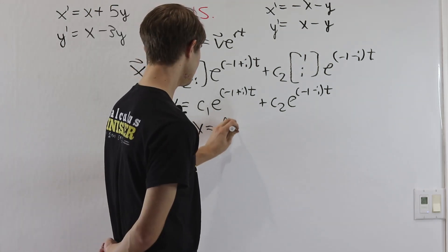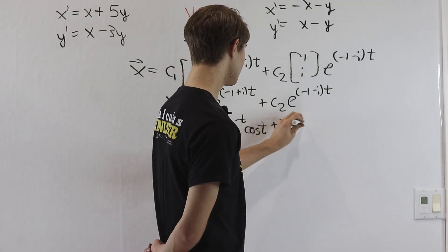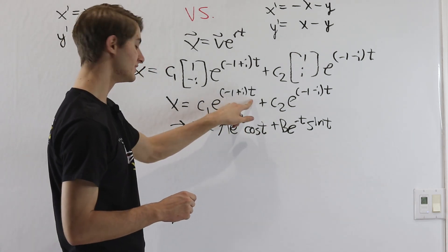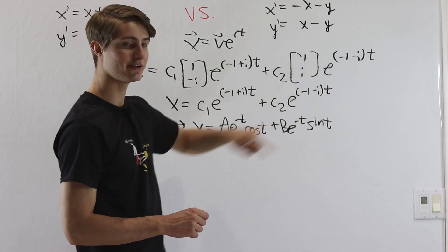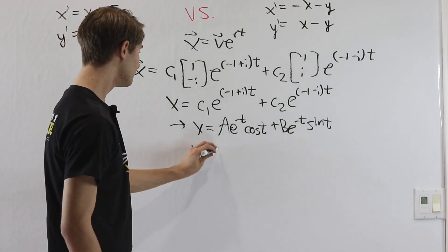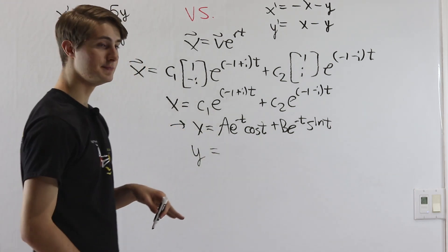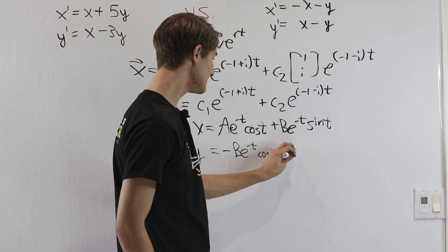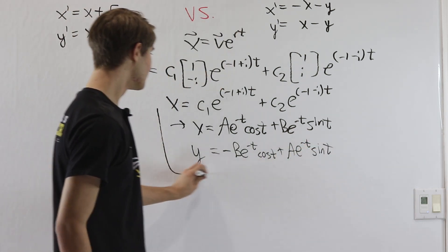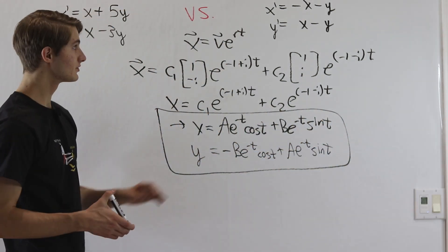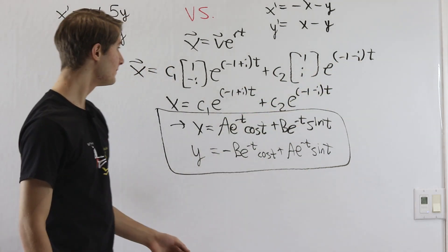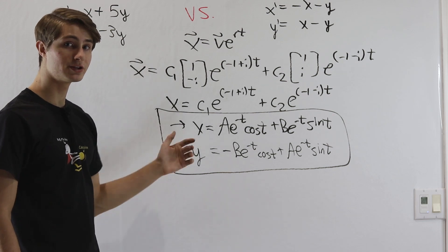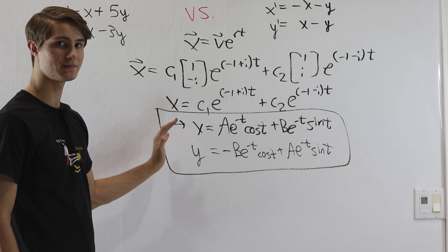Using Euler's identity, we can convert e to the it into real functions cosine and sine. After adjusting the coefficients, the full real solution is: x equals a e to the negative t cosine t plus b e to the negative t sine t. The e to the negative t comes from both powers being e to the negative 1 t, and cosine and sine come from e to the plus and minus it. For y, using the same a and b, we get y equals negative b e to the negative t cosine t plus a e to the negative t sine t. We started with real differential equations, got complex roots, but Euler's identity brings us back to a real solution.